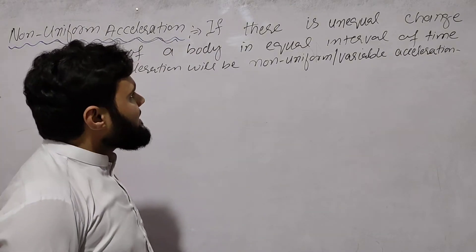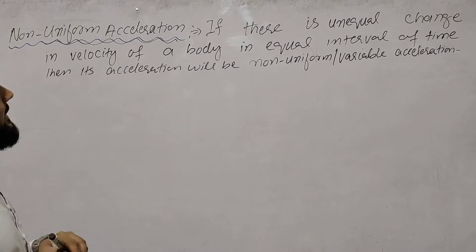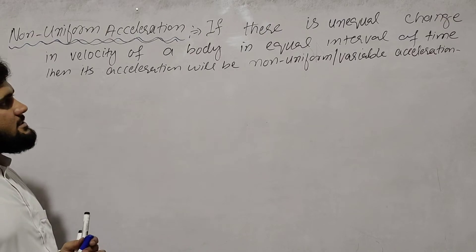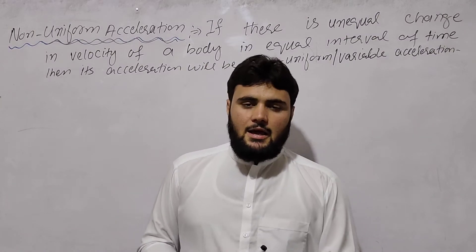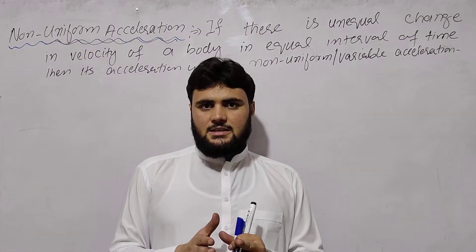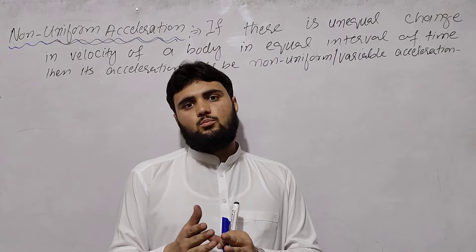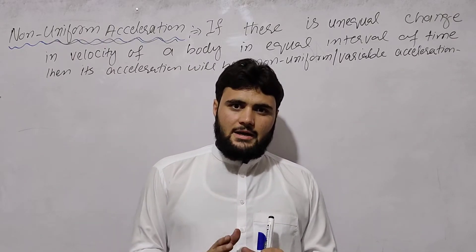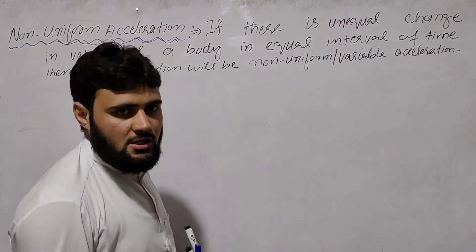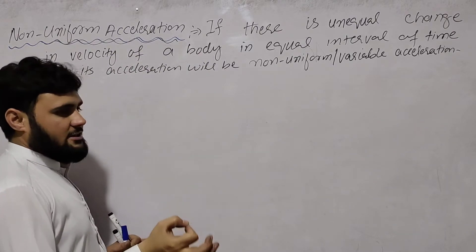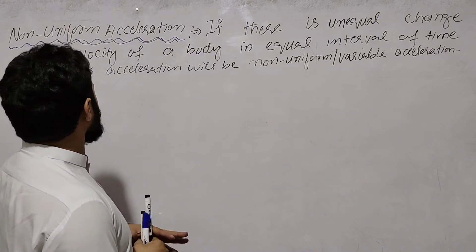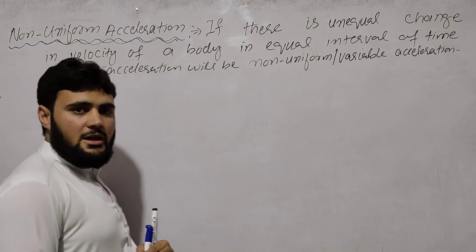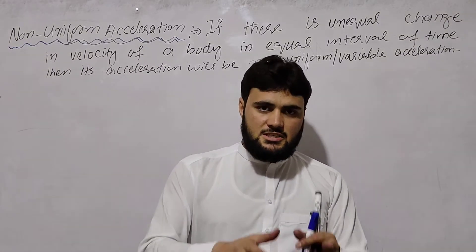Now the second type: if there is an unequal change in velocity of a body in equal intervals of time, then its acceleration will be known as non-uniform or variable acceleration. In equal time intervals, if the velocity changes by different amounts each time, that acceleration is non-uniform.